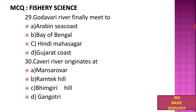Next, the Godavari river finally meets: A) Arabian Sea coast, B) Bay of Bengal, C) Hindi Mahasagara, D) Gujarat coast. The Godavari river finally meets the sea at the Bay of Bengal.